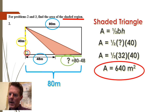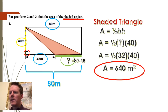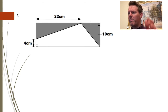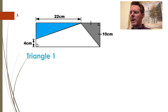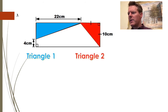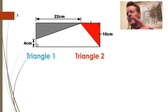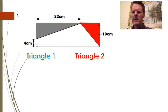The final problem is probably the easiest of the three. I have to find the shaded area, and it's actually just two right triangles. So I'm going to find the area of both triangles — one in blue and one in red — and combine them at the end.